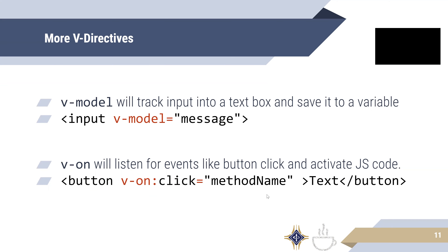Third, VModel. VModel just tracks input into a text box and saves it to a variable in JavaScript. In this syntax example, VModel is equal to a variable called 'message', so whatever you type into the text box is saved into the variable message. If I type ABCDEF, message is going to be equal to ABCDEF.